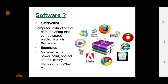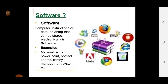What is software? As the name indicates, it is something basically soft — computer instructions or data. Anything that can be stored electronically is known as software. Examples of software are MS Word, Excel, PowerPoint, spreadsheets, library management systems, Adobe, Google Chrome, Recycle Bin, Explorer, and Office Outlook Express.